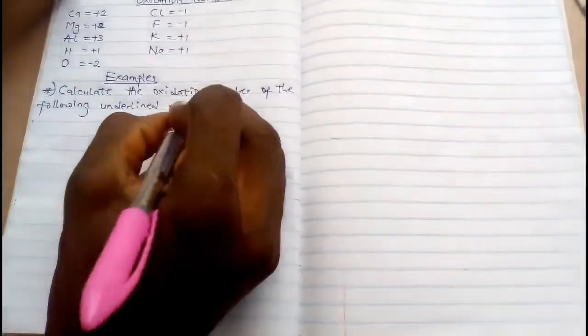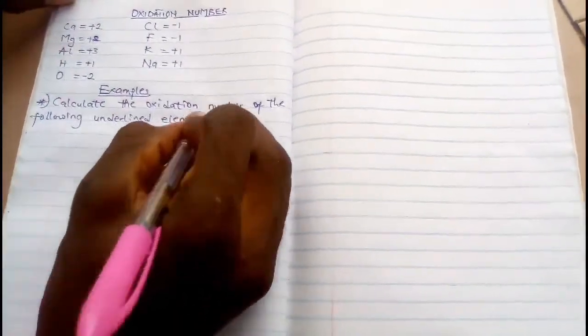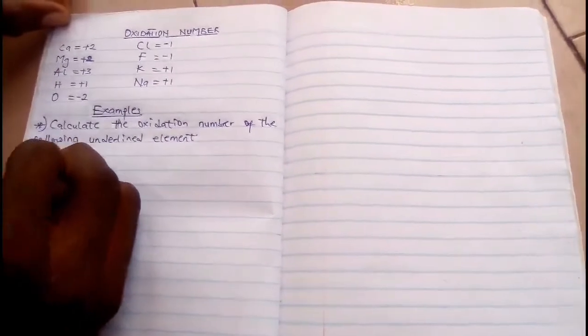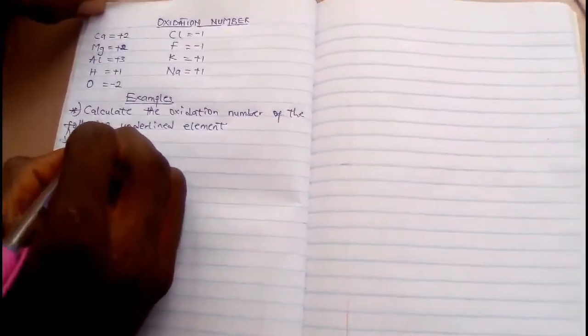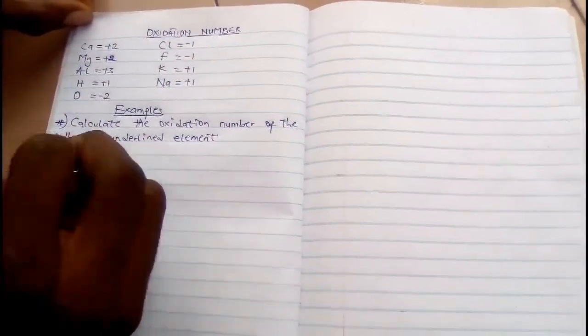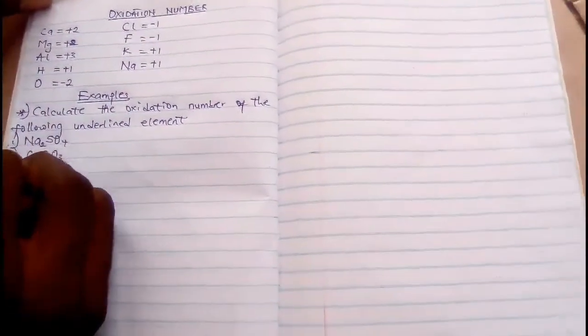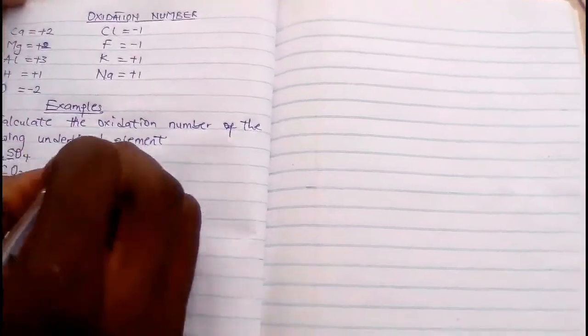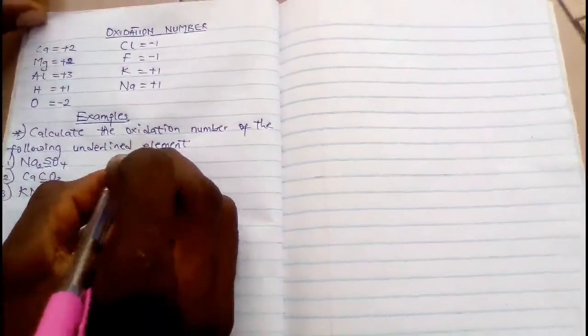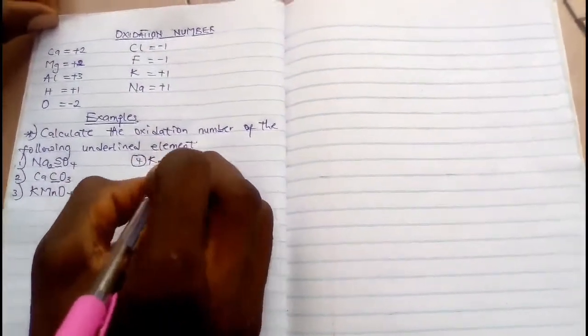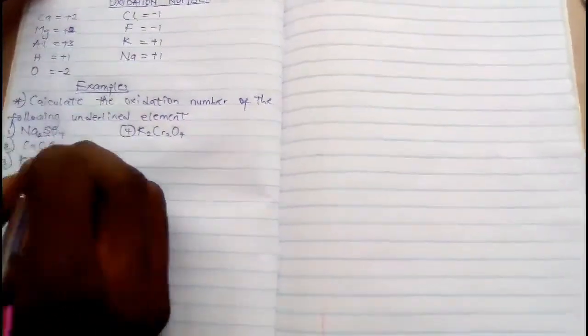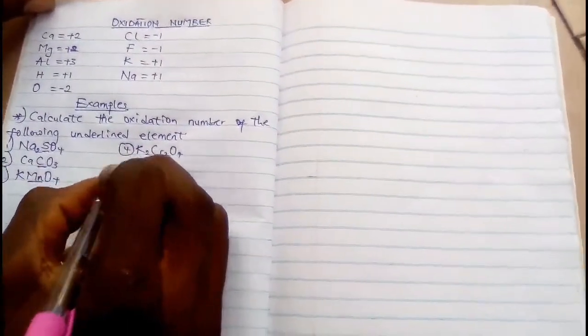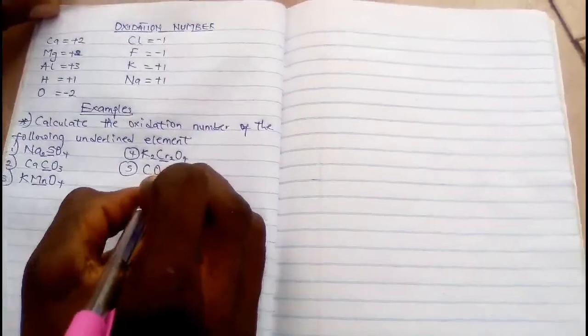We are told to calculate the oxidation number of the underlined element. Maybe let me bring in Na₂SO₄, CaCO₃, KMnO₄, K₂Cr₂O₇. Let me just bring CO₂.